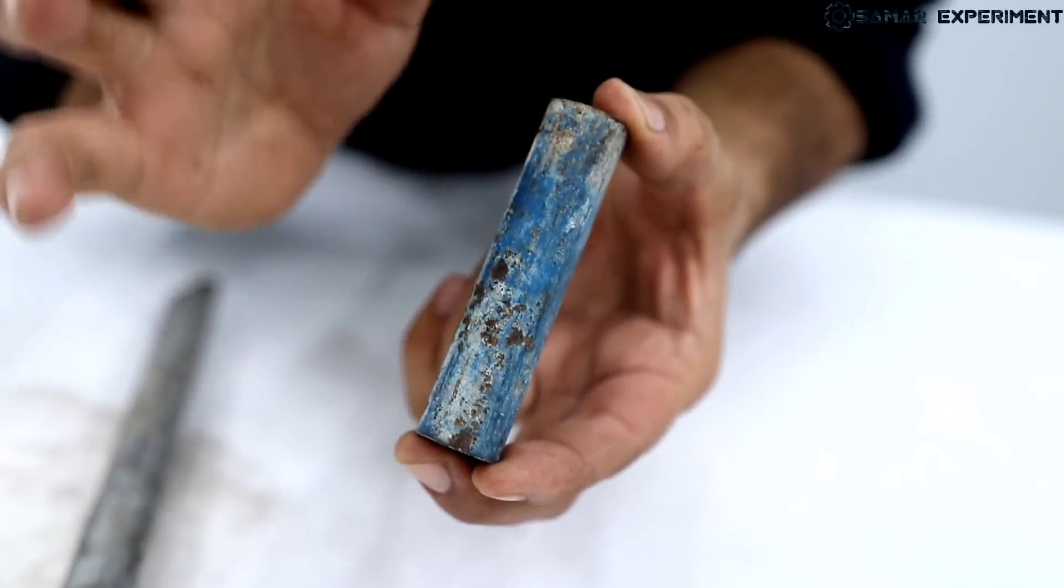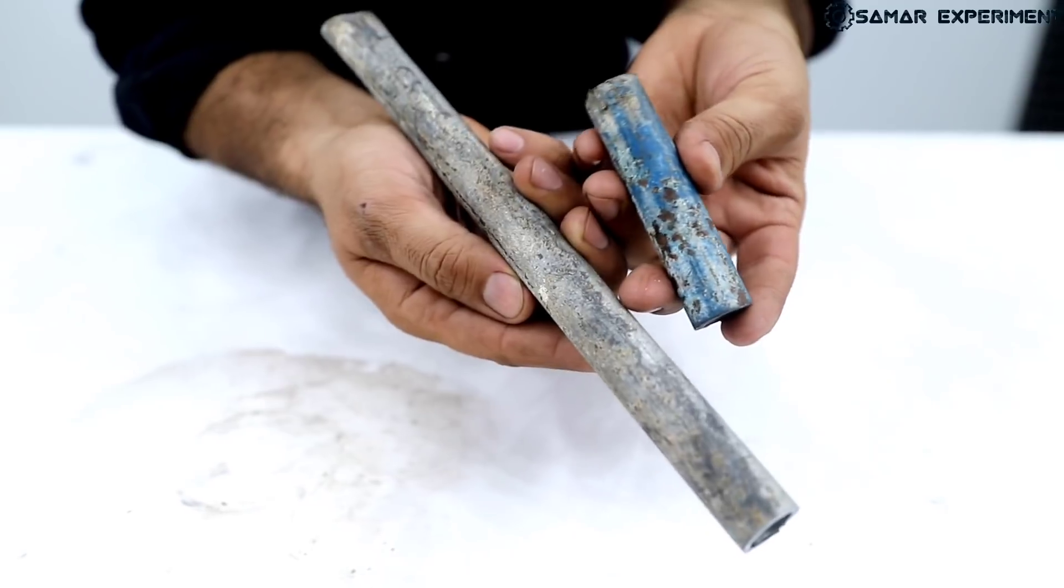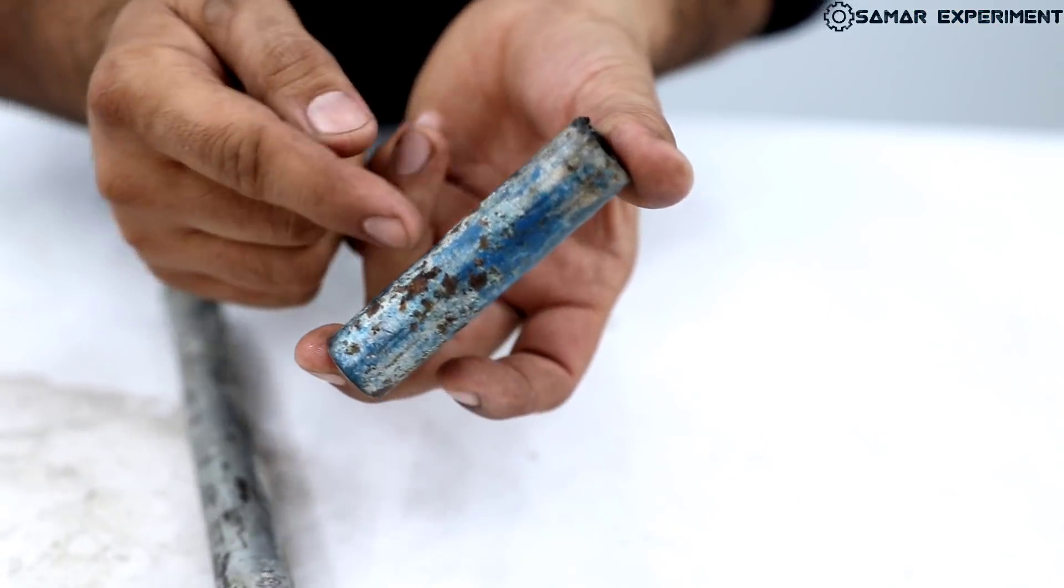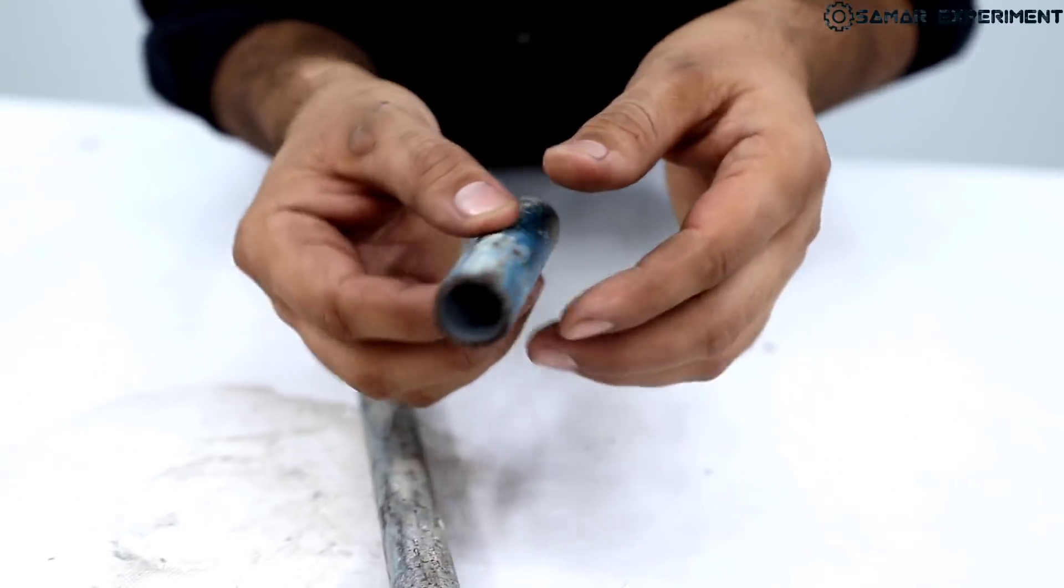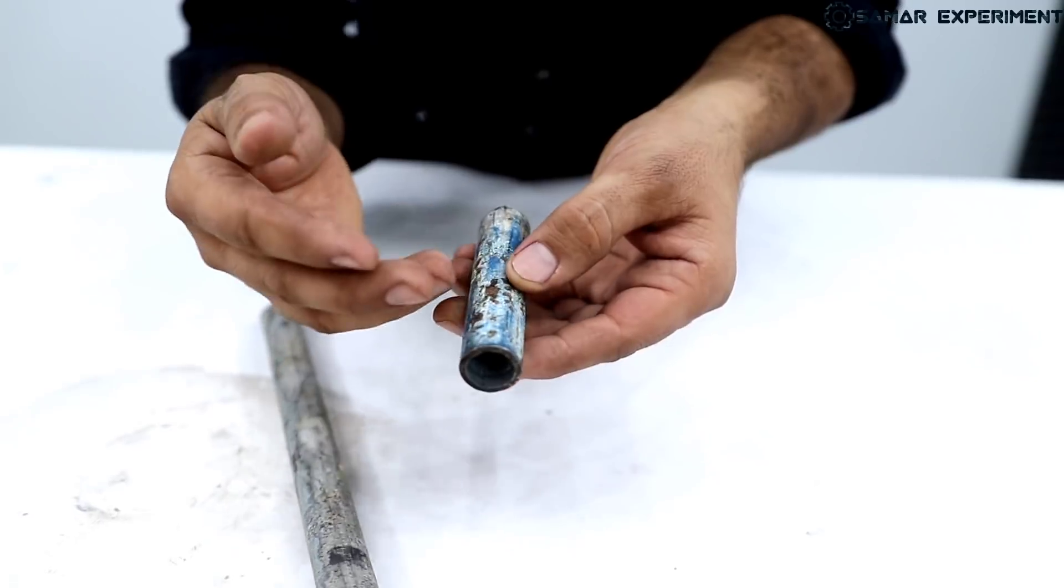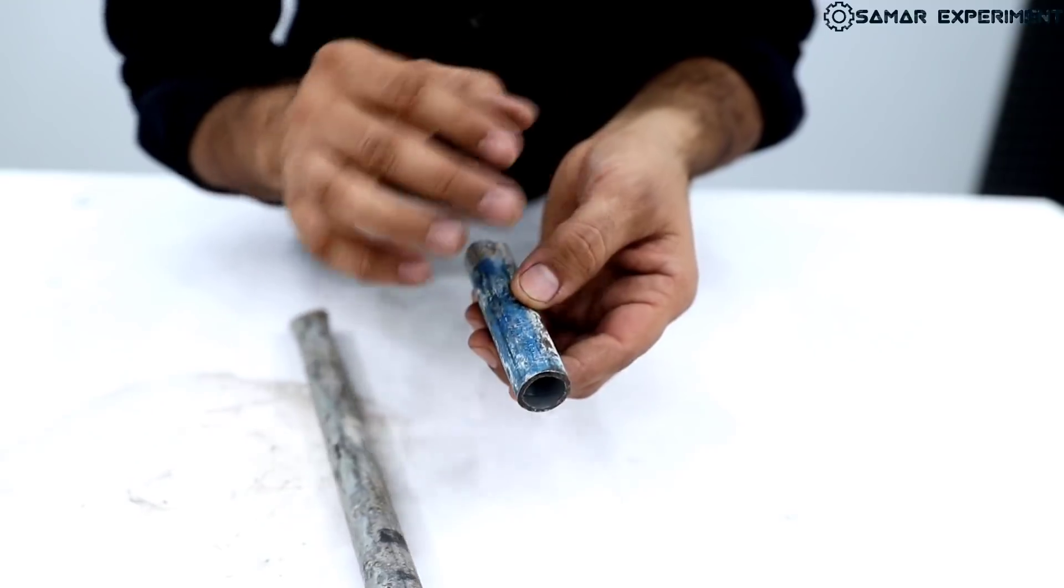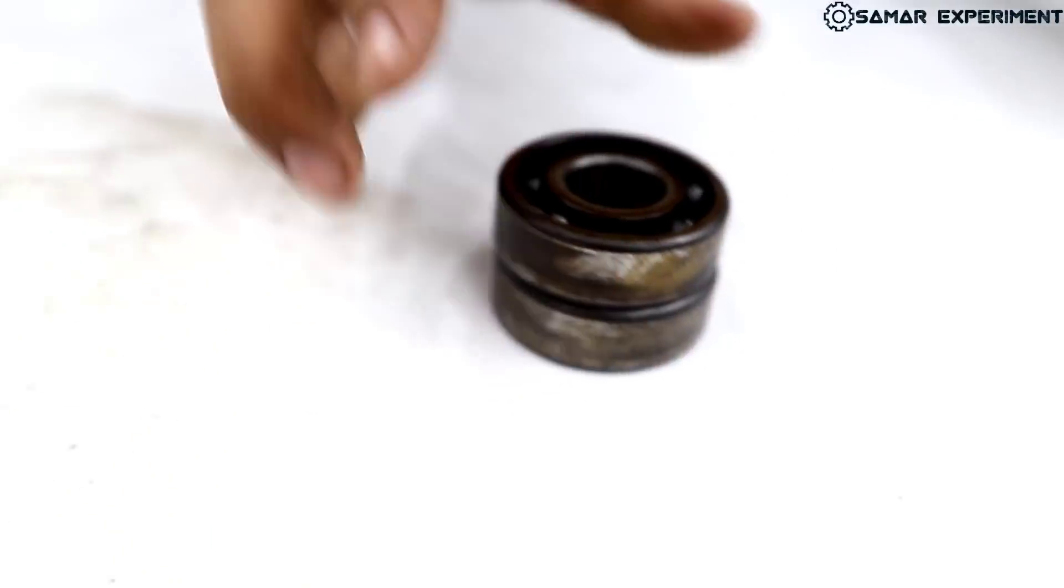This part, I have cut 9 cm. First, this is a GI pipe, galvanized iron. If I rub it a little bit, it's a little rust. I have to clean it like this. Now, let's take the bearing.